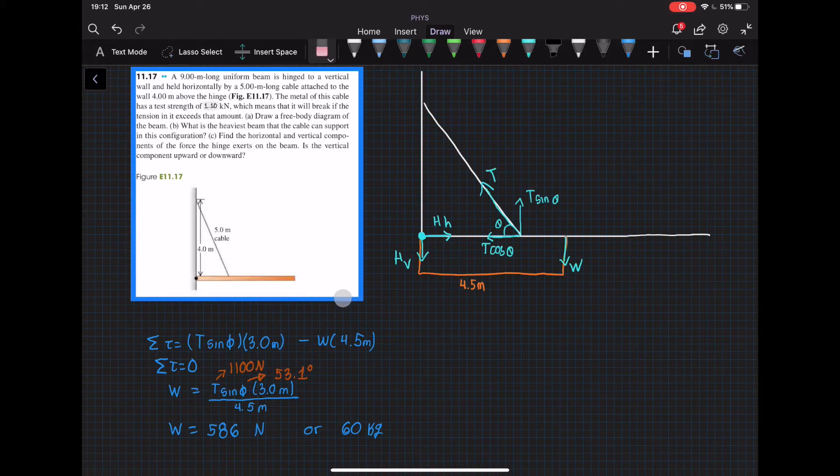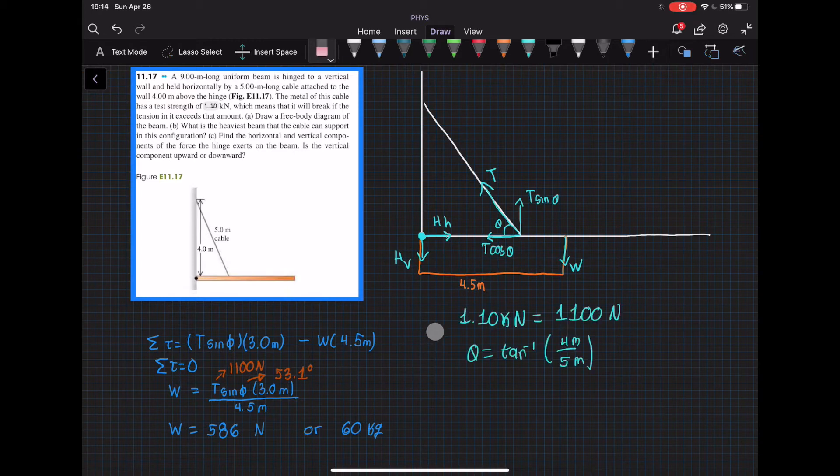And then we have the negative force of the weight which is 4.5 meters. Two things that I did right here was to convert 1.10 kilonewtons into 1100 newtons and also to find the angle I used inverse tangent of 4.5. And then we can start plugging the numbers right here.